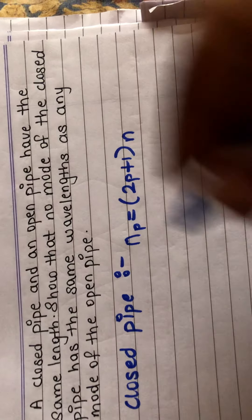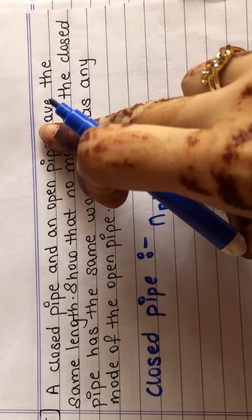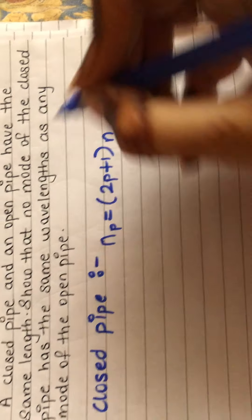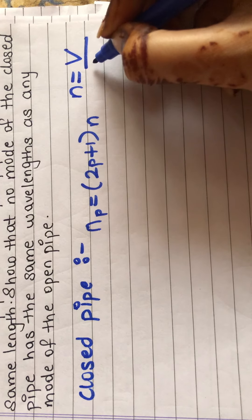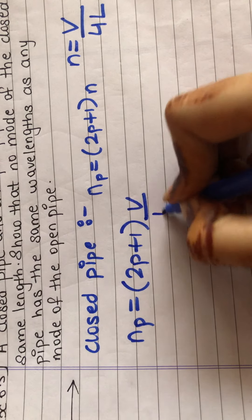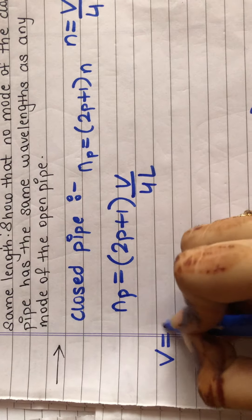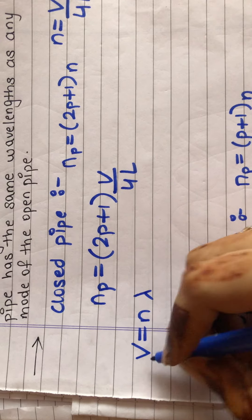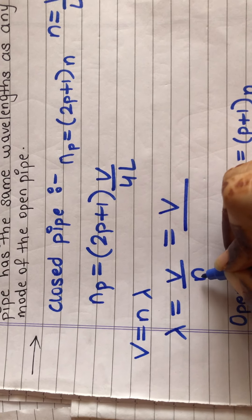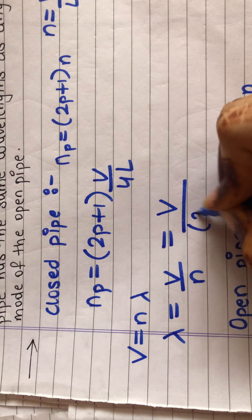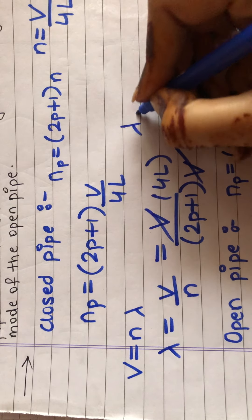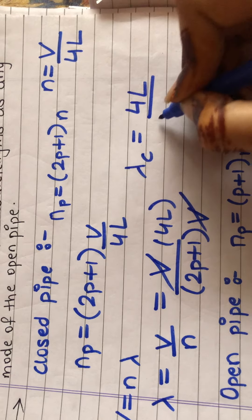First, we will bring the wavelength for the closed pipe. Starting with the general frequency of the Pth overtone: (2p+1) times N, where N for closed pipe is V upon 4L. Substituting, Np = (2p+1) × V/4L. Since V = Nλ, lambda equals V upon N. So lambda for closed pipe is 4L upon (2p+1).